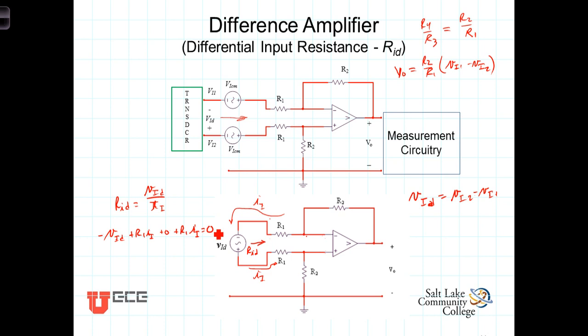Bringing VID to the other side as a positive and combining these two R1 I N's, we have 2R1 I N equals V I D.